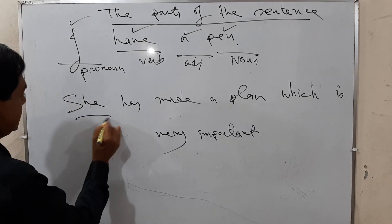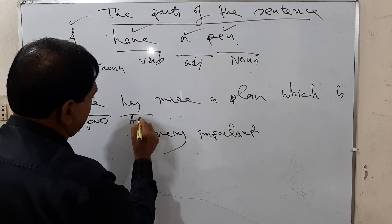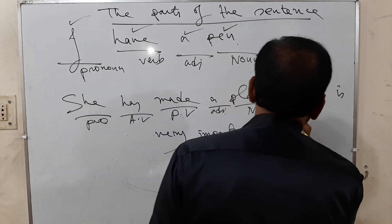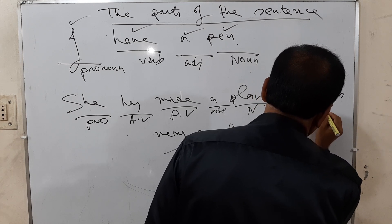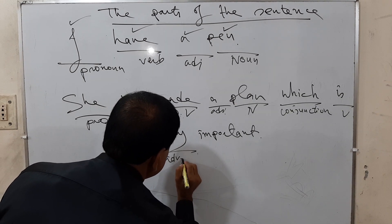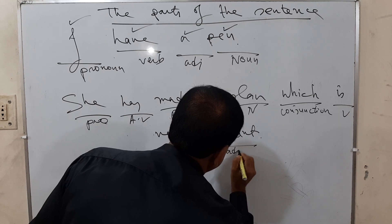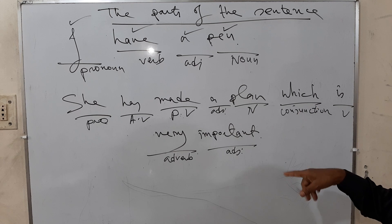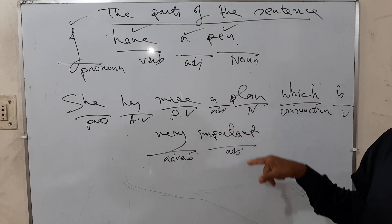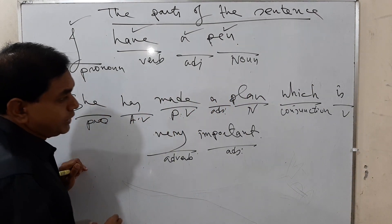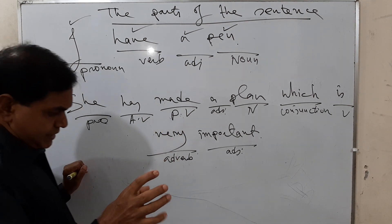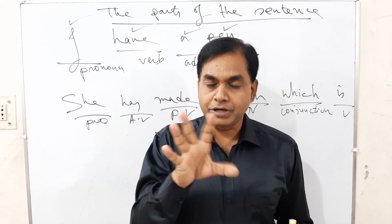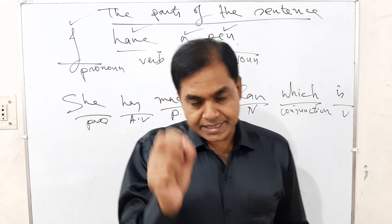Look at the sentence: 'She has made a plan which is very important.' 'She' is a pronoun; 'has' is an auxiliary verb; 'made' is the principal verb; 'a' is an adjective; 'plan' is a noun; 'which' is a conjunction and verb; 'very' is an adverb; 'important' is an adjective. We can easily find that all these parts have created this sentence very nicely and successfully. Many words form a sentence nicely if they are formulated in a systematic way, and a sentence has different parts of speech.